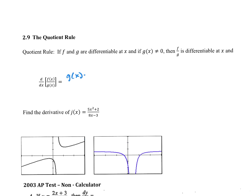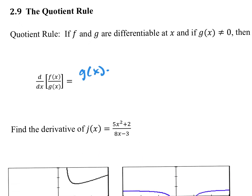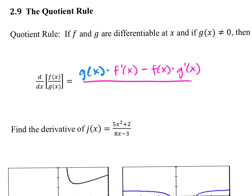It's the lower function, g, times the derivative of the higher, f prime. Roni said minus, I agree. If we just did the lower times the derivative of the higher, what do you think we want to subtract from that? She's saying the higher times the derivative of the lower — the higher times the derivative of the lower — all over the lower one squared.